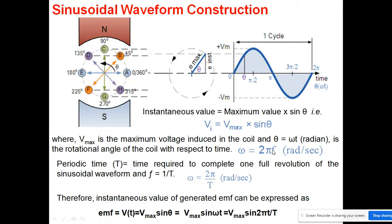This frequency is in cycles per second, and it basically depends on the speed of rotation of the conductor — a concept we already discussed in our induction motor topic. The time period, or periodic time, is the time required to complete one full revolution of the sinusoidal wave, represented by capital T.